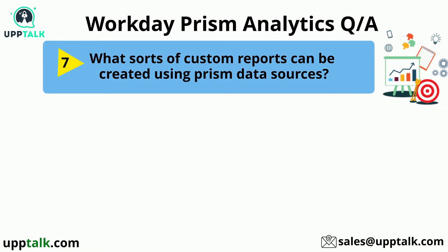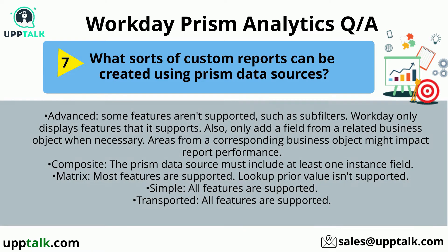What sorts of custom reports can be created using Prism Data Source? You can create these types of custom reports: Advanced — some features aren't supported, such as sub-filters; Workday only displays supported features, and only add a field from a related business object when necessary, as fields from a related business object might impact report performance. Composite — the Prism Data Source must include at least one instance field. Matrix — most features are supported, but lookup prior value isn't supported. Simple — all features are supported. Transposed — all features are supported.